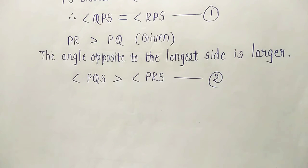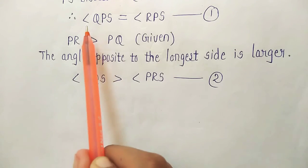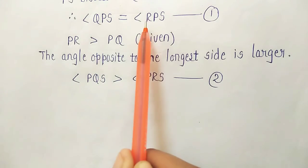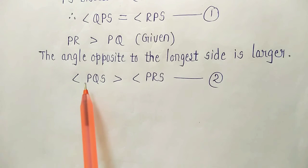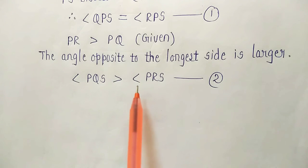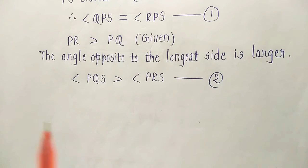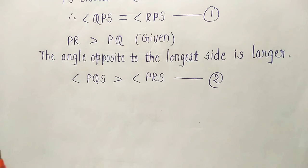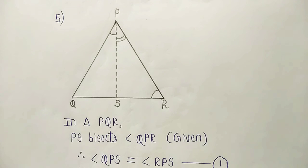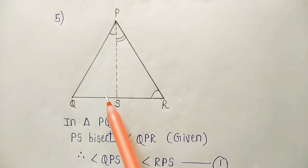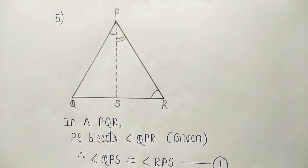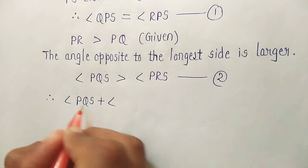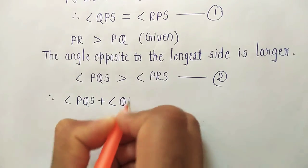So we write angle PQS is greater than angle PRS, and this is equation number 2. Now look at equations 1 and 2. We have angle QPS equal to angle RPS, and we have angle PQS greater than angle PRS. What if we add these angles into equation number 2? So for angle PQS we will add angle QPS.